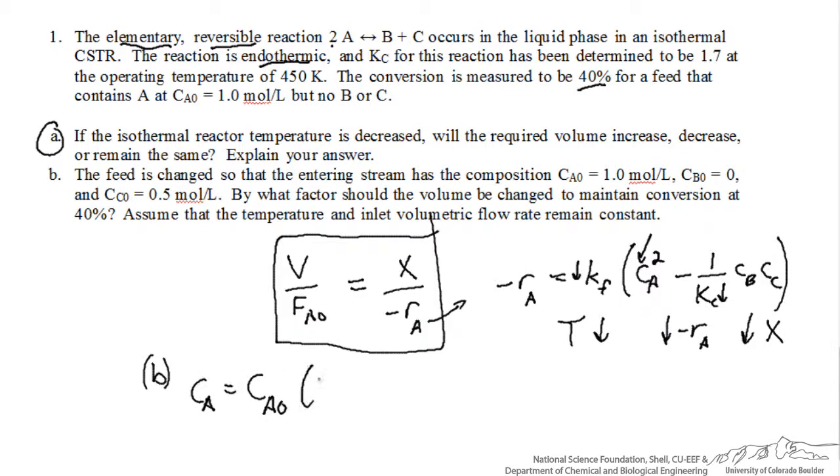We can simply express the concentration of A in terms of an initial concentration times 1-x. We can write down the concentration of B. Since we're not feeding any B, it will equal the concentration of A times x divided by 2, because for every mole of A that reacts, we produce half a mole of B. We expect B to be at half the concentration of the A that was reacted, and the same is true for the concentration of C.